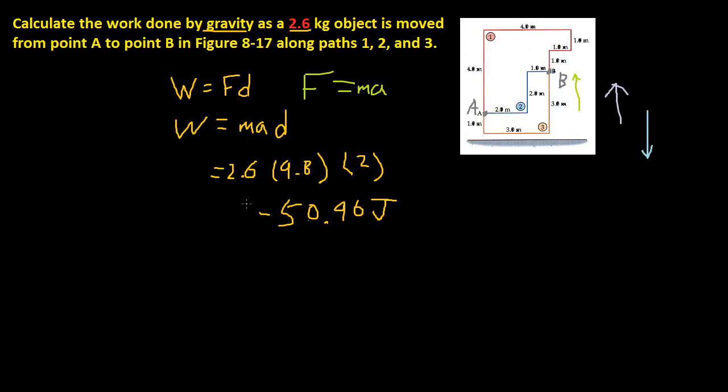So the answer is negative 50.96 joules for all 3 of them, because they all start on the same spot and end on the same spot. The logic is that the net work done by the 3 directions they traveled in must be the same.